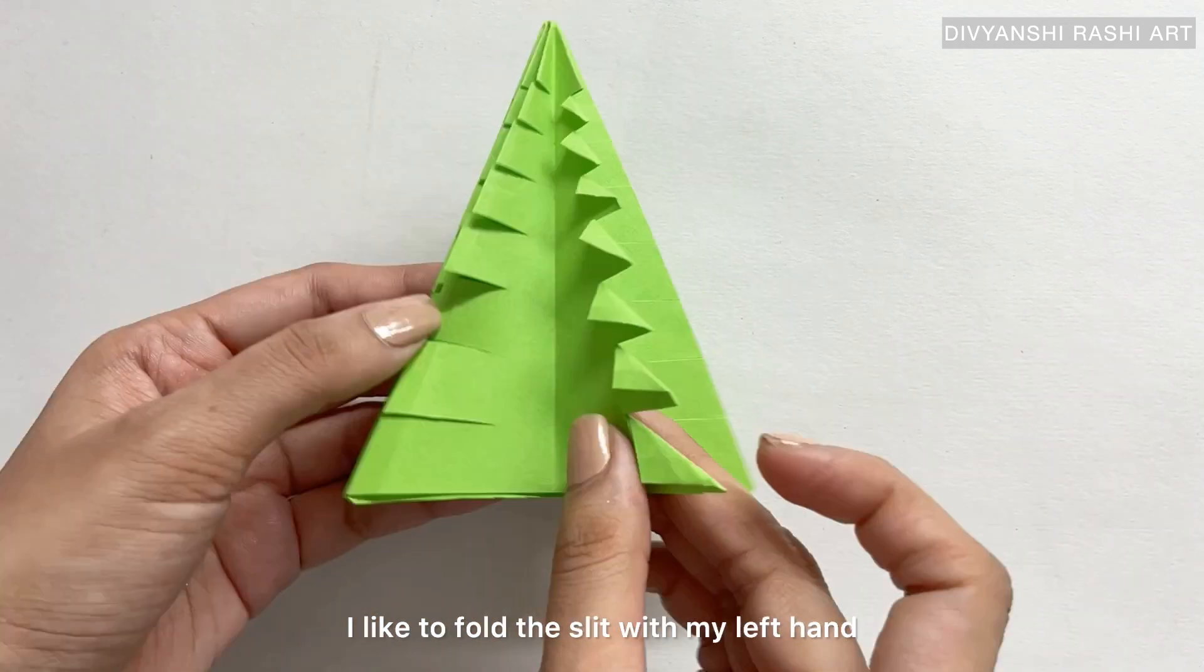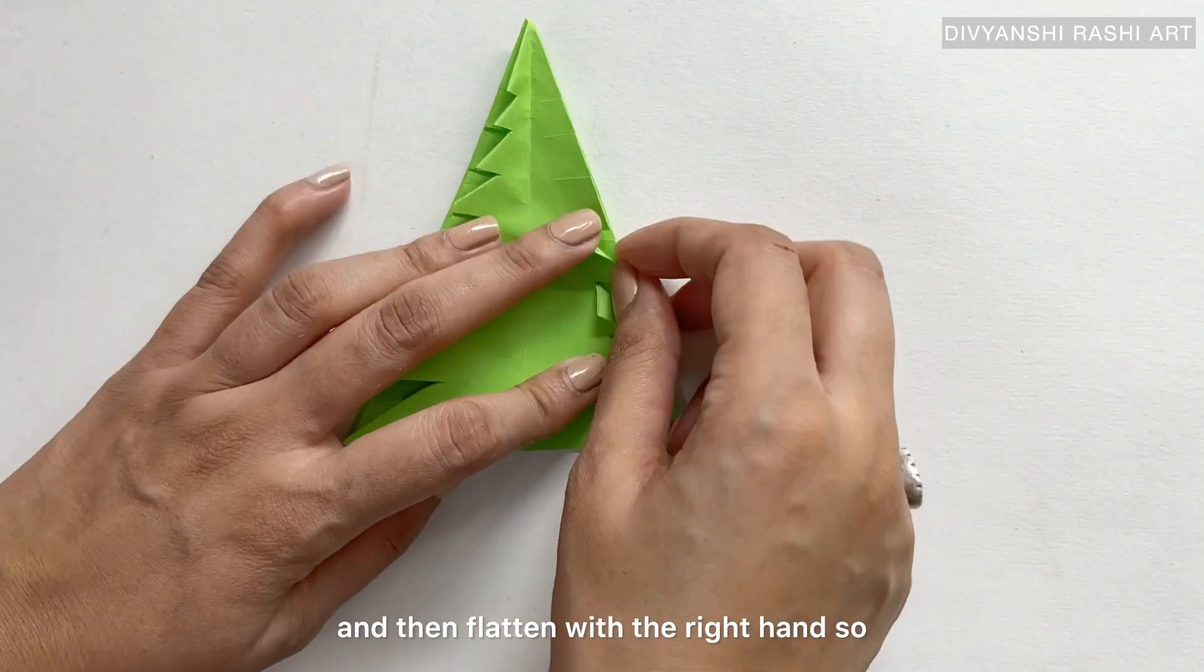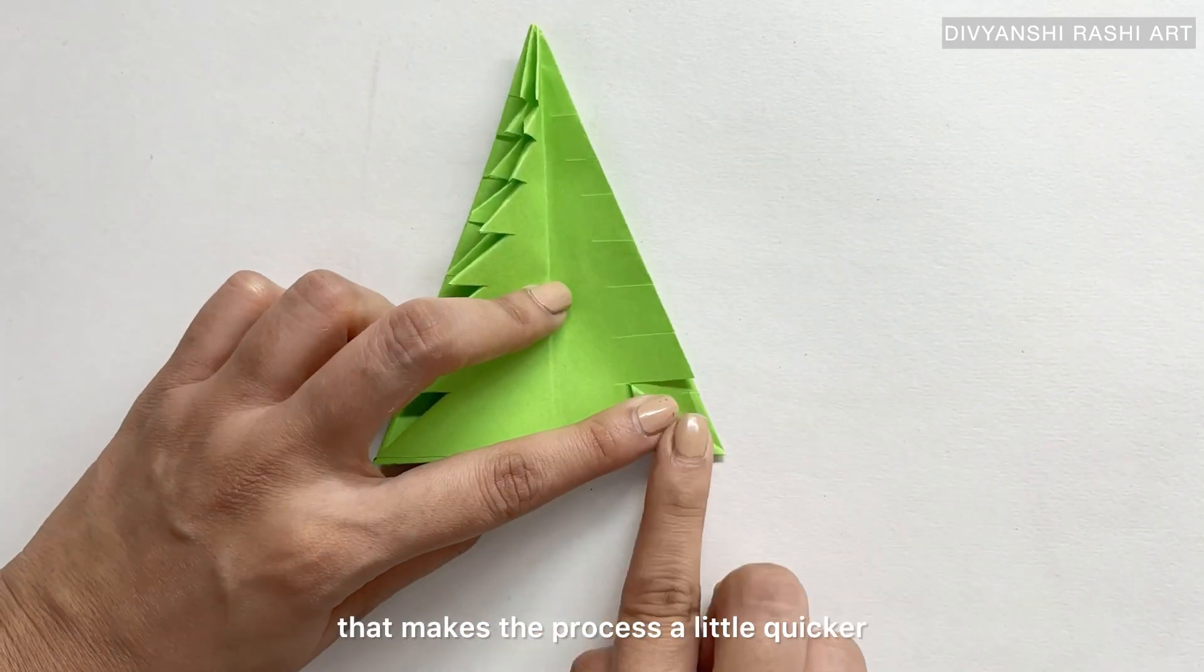So I'm going to fold the slit with my left hand and then flatten with the right hand—that makes the process a little quicker.